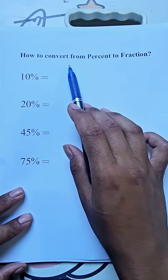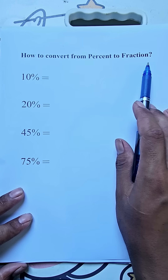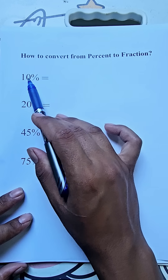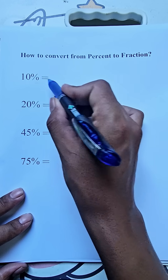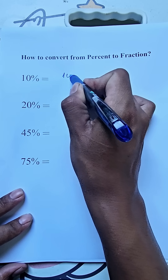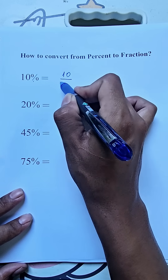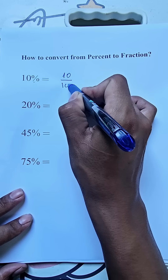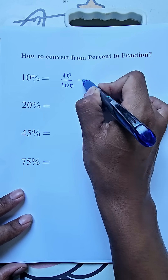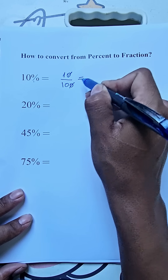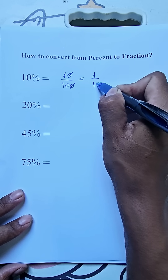How to convert from percent to fraction. 10% is equal to 10 divided by 100. If we simplify, we get 1 divided by 10.